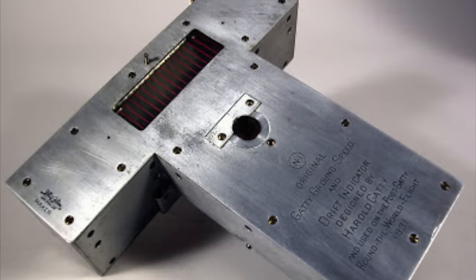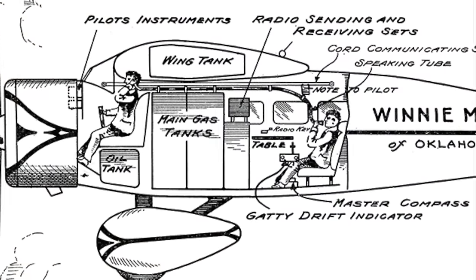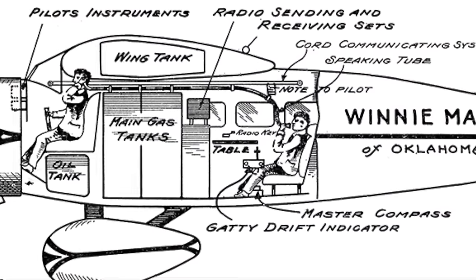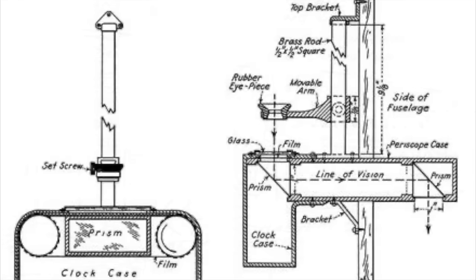So the drift sight that Gatty invented for this flight took the form of a periscope that stuck out horizontally from the fuselage of the aircraft allowing the navigator to look straight down at the ground. Inside this periscope was a loop of clear film with lines drawn on it at regular intervals driven at a constant speed between two spools by motor. The navigator would look through the eyepiece and adjust the height of the eyepiece until objects on the ground seemed to be moving at the same speed as the lines on the film.